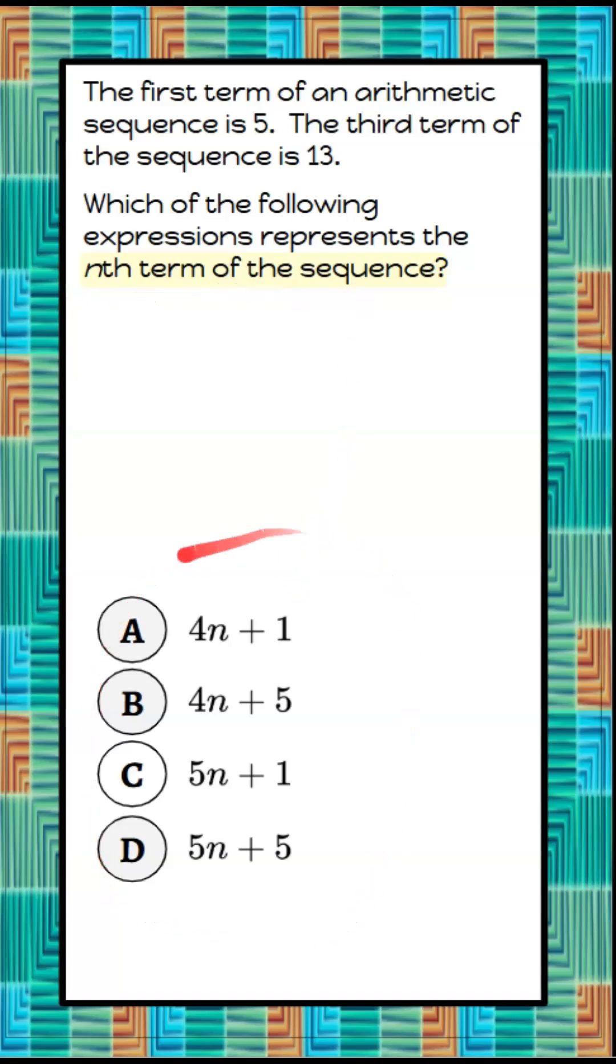So we're given four expressions, and we want to know which one will give us any term of this arithmetic sequence. Once again, we're told the first term is 5 and the third term of the sequence is 13. So we know the first term and the third term. We do not know the second.